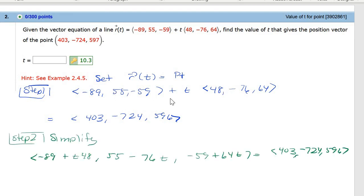The first step is to write down this r(t) and set it equal to the point. So I get this r(t), which is given to me by the red, which will be different for you, and then you set it equal to this point 403, -724, and 596. Then you simplify, I call it simplifying, but it's actually combining these two terms together.